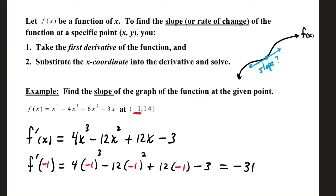Hey everybody. Let's look at function f of x defined by the variable x. To find the slope or rate of change of a function at a specific point x, y, first we need to take the first derivative of the function, which represents the rate of change at any value of x, and then we will substitute the x-coordinate of the point given into the derivative and solve.